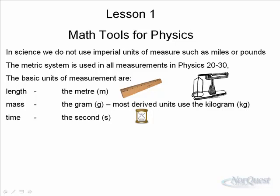The metric system is now used in physics 20 and 30. The basic units of measurement are the length, for length we use the meter, and of course we can use smaller or larger units. For mass we use the gram, although in physics we usually use the kilogram as the basic unit. And for time we use the second. Sometimes we might use the hour or the day or the year depending on our need, but the second is the standard unit.